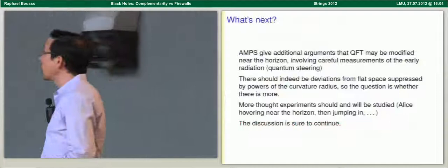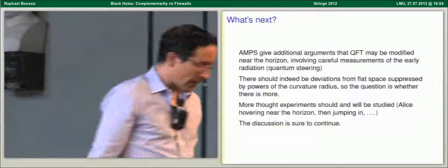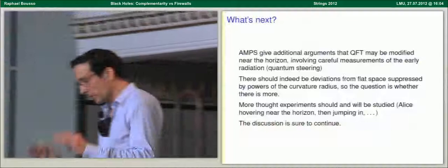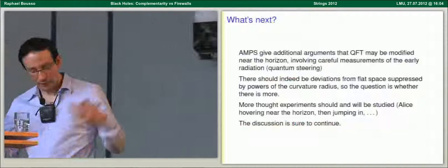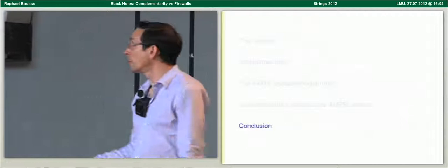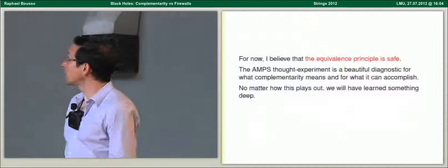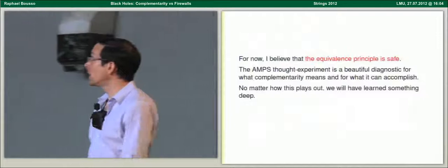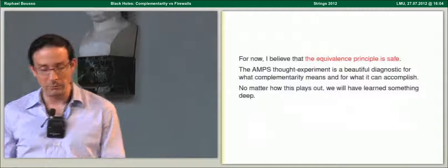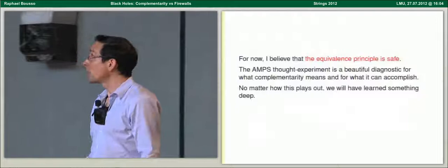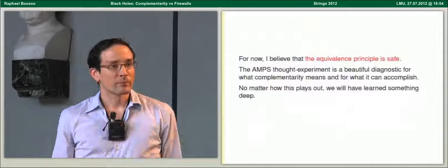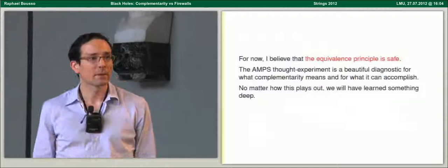AMPS have more arguments; I gave the cleanest one, which requires no particular measurements on the Hawking radiation. There are more complicated things you could try, but they also have more loopholes. The discussion is far from over. Nevertheless, I believe the equivalence principle remains safe for now. The AMPS thought experiment has shown us very clearly what complementarity means and does not mean. No matter how this plays out in the end, we will have learned something very important. Thank you.